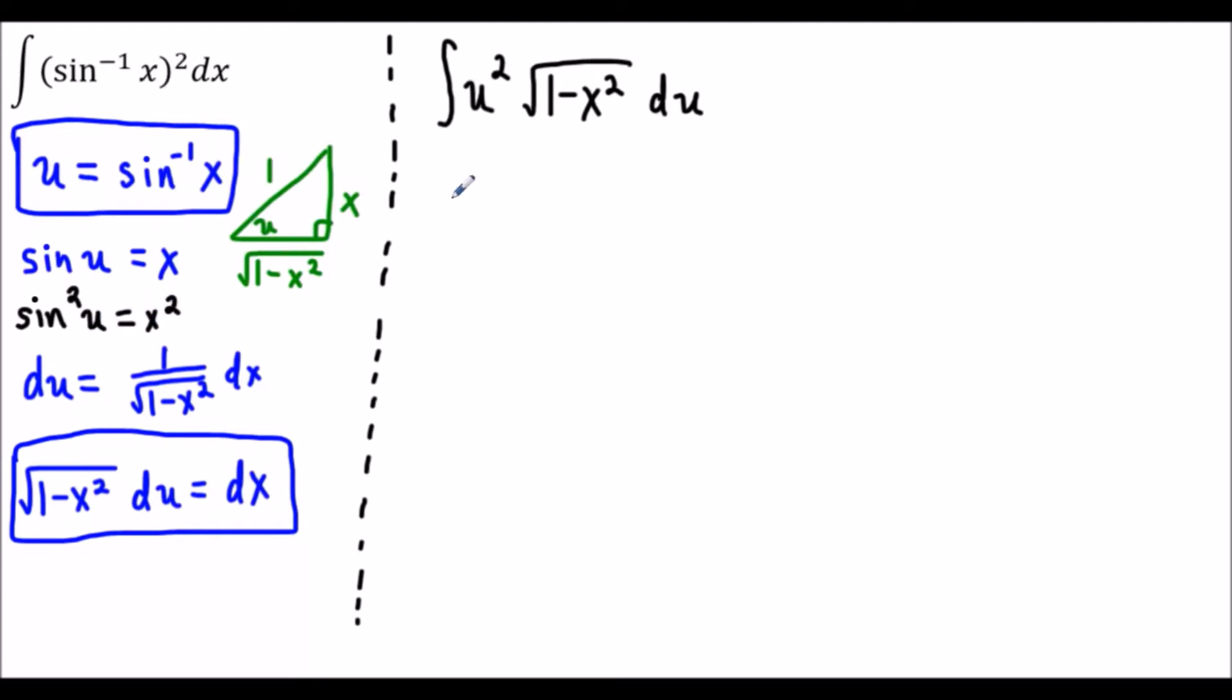If we square both sides we'll have sine squared u is equal to x squared. For the next line here we're going to have the integral of u squared times 1 minus sine squared u, and we just tack on this du here.